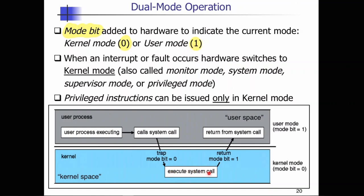We execute that system call, which is in the kernel space, and then return from the kernel space to the user space. On return from the system call, the mode bit is set back to one. That differentiates between a user process and a kernel process. Since kernel processes are more important and hence more privileged, certain system calls and machine instructions — privileged instructions — can only be issued in kernel mode, so the user cannot interfere with what goes on in the kernel space.